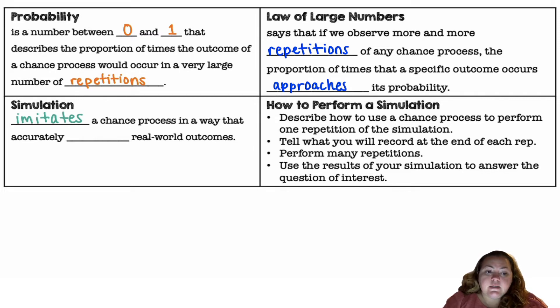A simulation is when we imitate a chance process in a way that accurately models real-world outcomes. How to perform a simulation: describe how to use the chance process to perform one repetition of the simulation. Tell what you will record at the end of each repetition. Perform many repetitions and then use the results of your simulation to answer a question of interest.